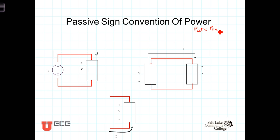But when we're analyzing a circuit, we don't always know at the outset which devices are acting as sources of power — actually putting power into the circuit — and which devices are acting as places where power is dissipated or removed from the circuit. Devices that place energy into the circuit are known as sources, and devices that dissipate that energy to the environment are known as loads.